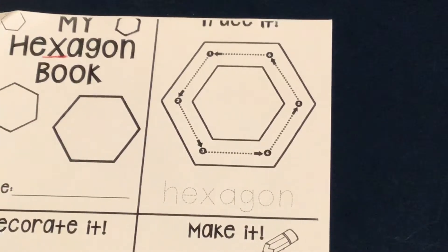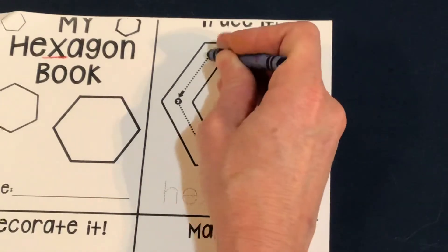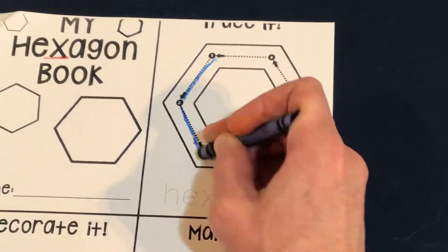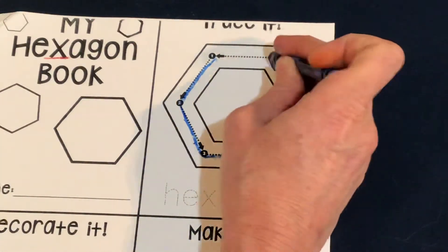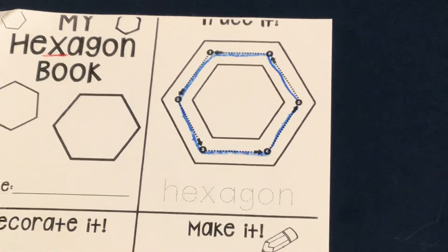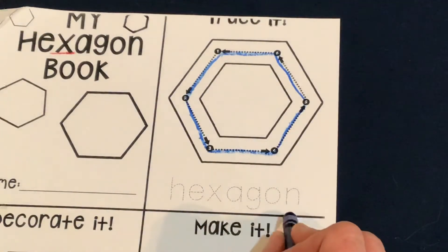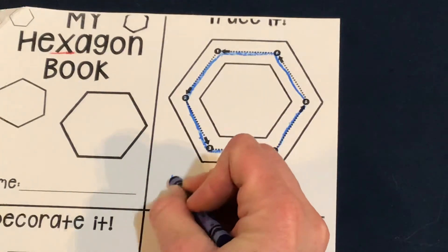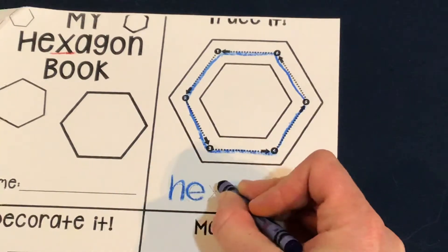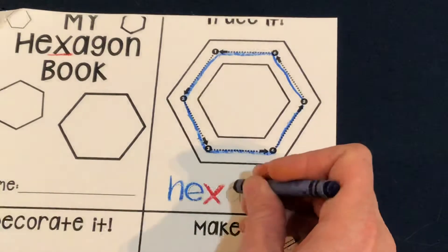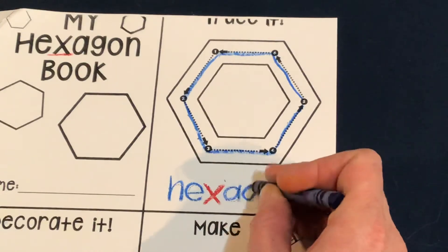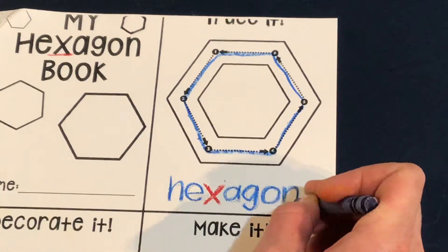I'm going to trace my hexagon blue. Start at the one. How many sides? One, two, three, four, five, six. That's right, a hexagon has six sides. Now let's trace the word hexagon: H-E — the hexagon has the letter X in it. Hexagon — that's our letter of the week — A-G-O-N. Hexagon.